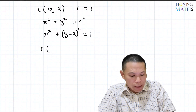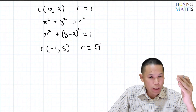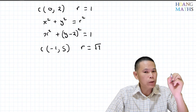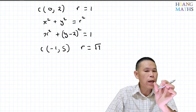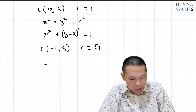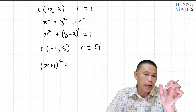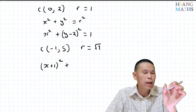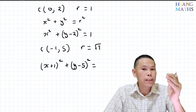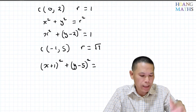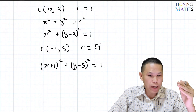One more example: center (negative 1, 5) and radius root 7. Starting from x squared plus y squared equals r squared: horizontally it moved one unit to the left, so x becomes (x plus 1) squared. For y, the circle moved five units up, so it becomes (y minus 5) squared. The radius squared is (root 7) squared equals 7. So the equation of this circle with center (-1, 5) and radius root 7 is (x+1)² + (y−5)² = 7.